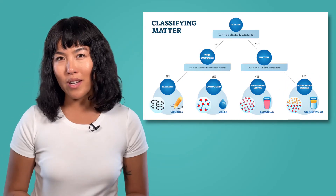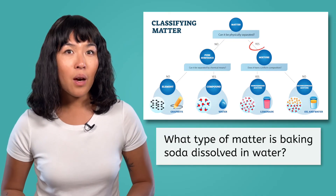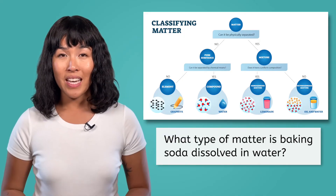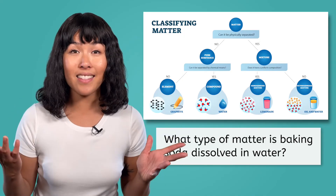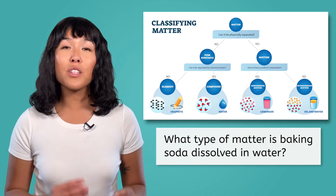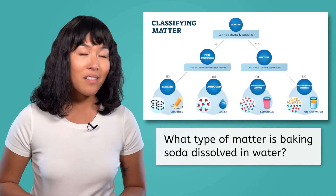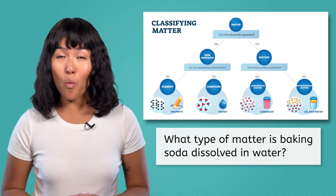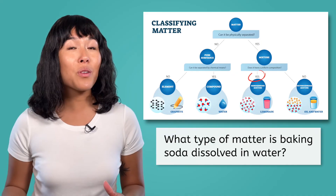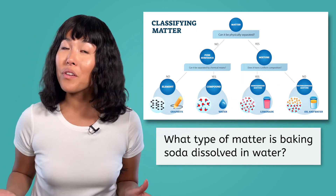Let's work through one more example. What about baking soda dissolved in water? Can it be physically separated? Yes, it can. There is a process called distillation that allows us to separate out a solid that has been dissolved in water — you heat the water up to a boil so it becomes a gas, and what is left behind is the solid that was dissolved. So baking soda dissolved in water is a mixture as well. Last question: does it have a uniform composition? Think of salt water — if you drink a glass of salt water, every sip tastes the same. Solutions by definition are uniform in composition, so baking soda dissolved in water is a homogeneous mixture. If this is still a little unclear, don't worry — we will practice more of these in the lesson PDF.